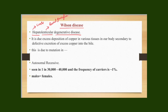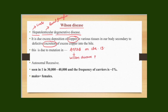Wilson's disease is due to excess deposition of copper in various tissues in our body, secondary to defective excretion of excess copper into the bile. This is primarily due to mutation in the gene ATP7B present on chromosome number 13. This gene codes for a protein called Wilson's disease protein, which is a copper transport P-type ATPase — a transmembrane protein present in the endoplasmic reticulum of hepatocytes. The defect in this protein leads to impaired excretion of copper into the bile, leading to excess deposition in various tissues.